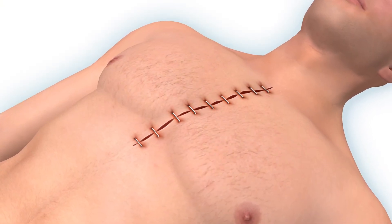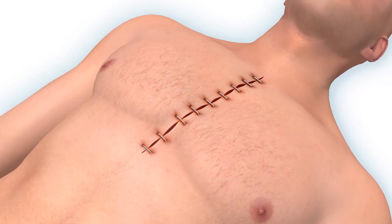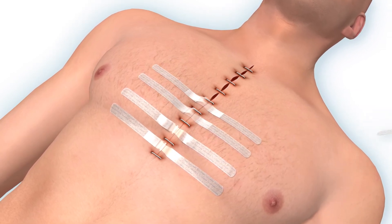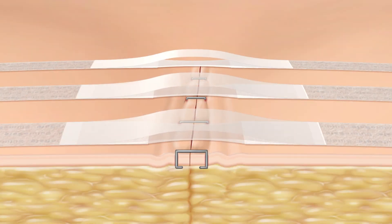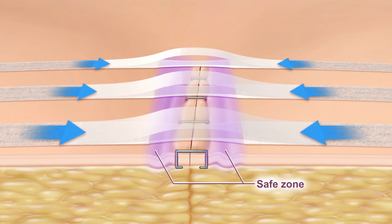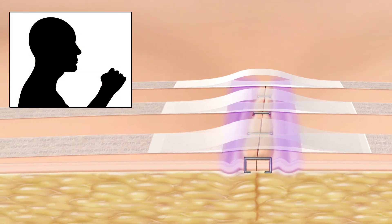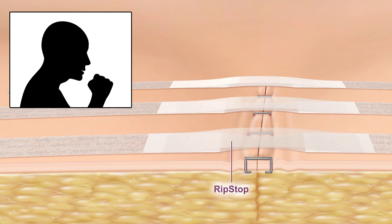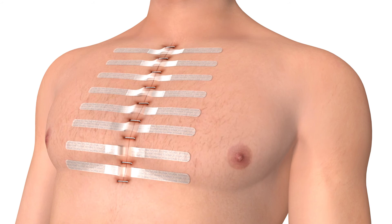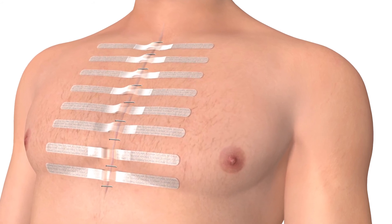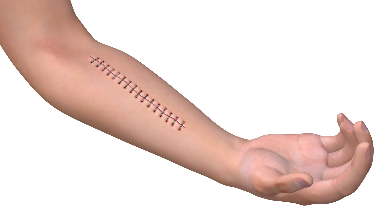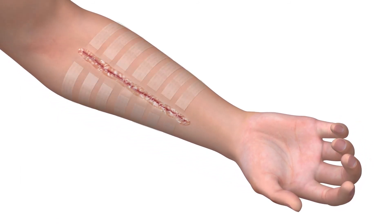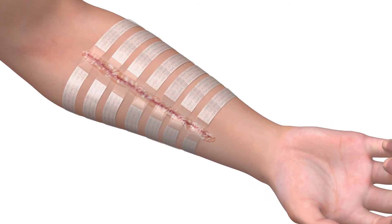Closed wounds under high tension are susceptible to pain, inflammation, dehiscence, and hypertrophic scarring. SutureSafe strips are applied over the closed wound, providing dynamic low compression forces that counter the tendency to dehisce. The constant low appositional forces create a safe zone lateral to the skin edges that adapt to the patient's movements. If excess lateral tension is exerted, SutureSafe's ripstop feature prevents further pulling on the incision. Reduced pain encourages patients to be more mobile, thereby improving recovery times. The incision remains under very low or no tension during the healing process, dramatically reducing scar formation. Whether a wound is closed by staples, sutures, or glue, reinforcement by SutureSafe improves patient comfort, recovery time, and cosmetic results.